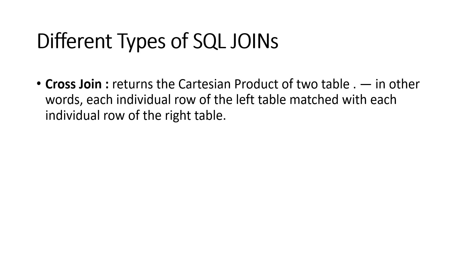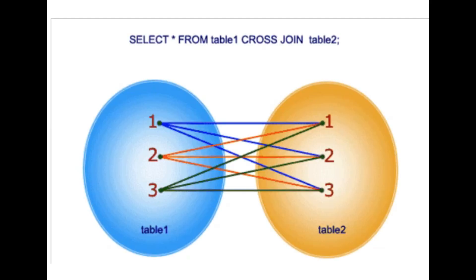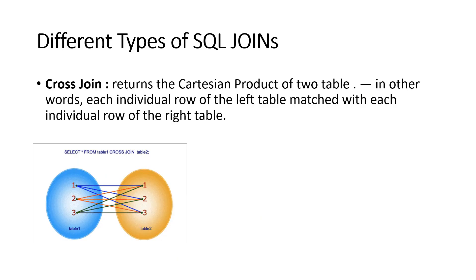The next type of SQL join is CROSS JOIN. It returns the Cartesian product of two tables — each individual row of the left table matches with each individual row of the right table. For example, if table one has three rows and table two also has three rows, each row of table one will match all rows of table two, giving 9 total result rows.